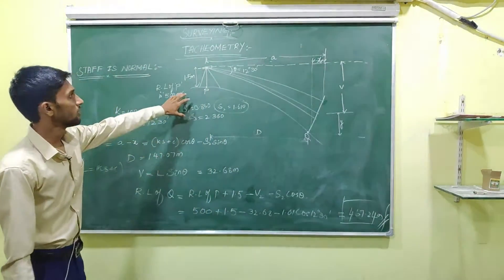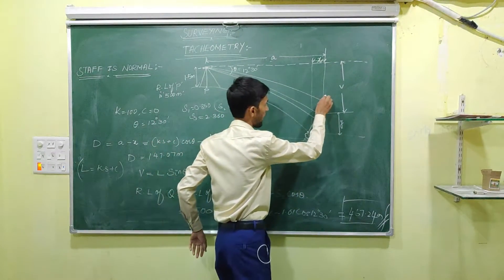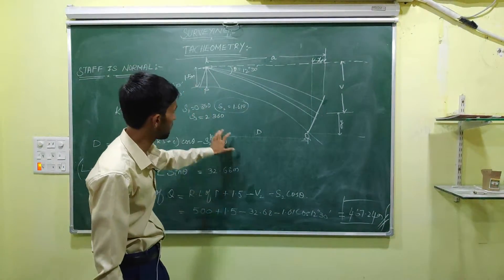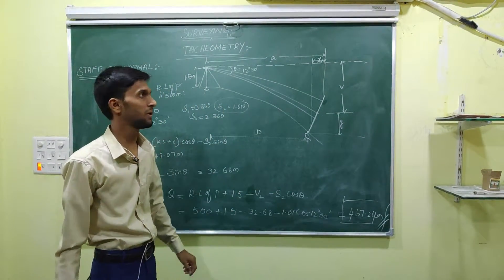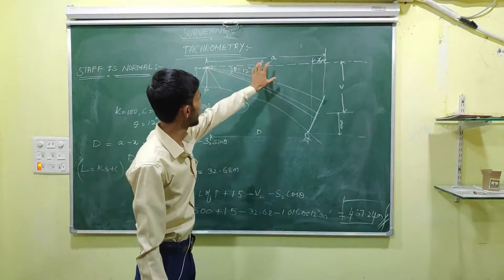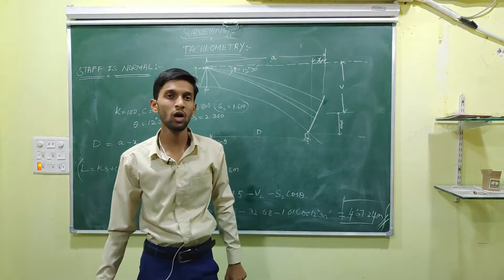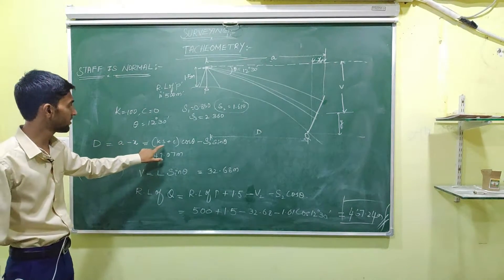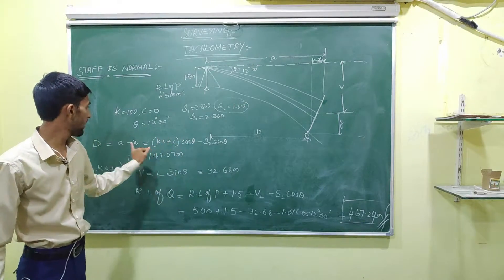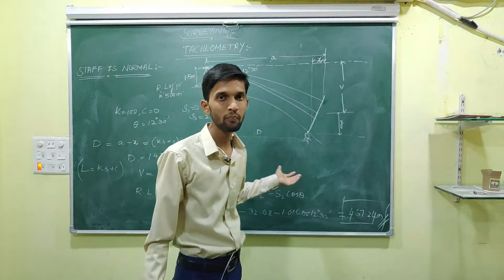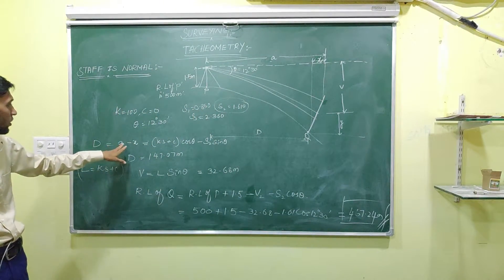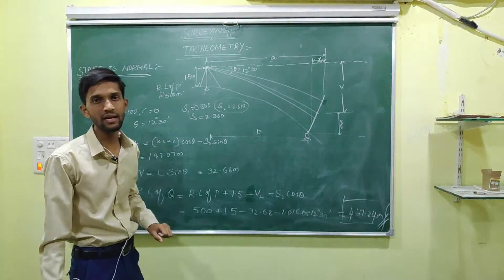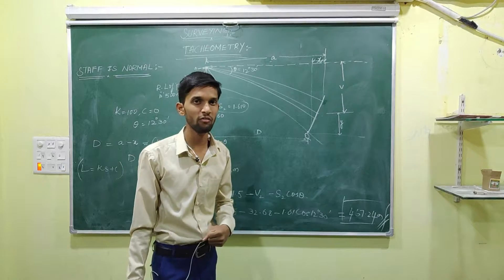Here the setup is: stop is normal and the ground is in depression. I want to find the horizontal distance between P and Q. For this, D = A − X, so D = (KS + C) cos θ − S2 sin θ. We are using an analytical lens where K = 100 and C = 0. The angle θ is given as 12 degrees 30 minutes.